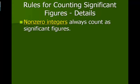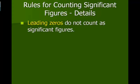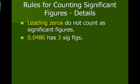Non-zero digits are always significant, so 3,456 would have four significant figures, so they all count. Leading zeros do not count as significant digits, so 0.0486 would only have three significant figures.